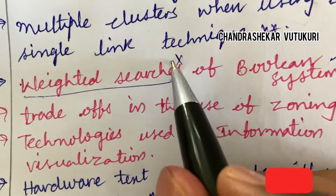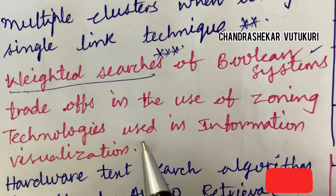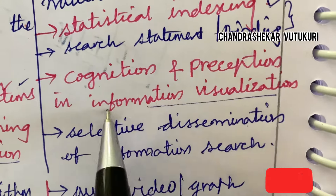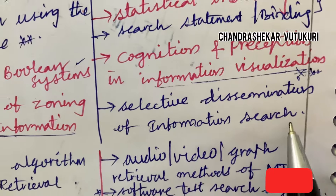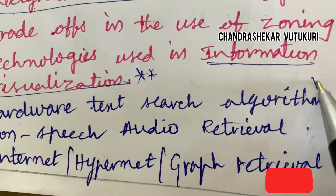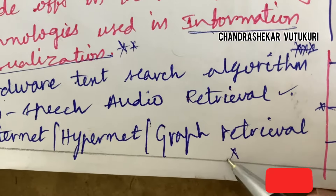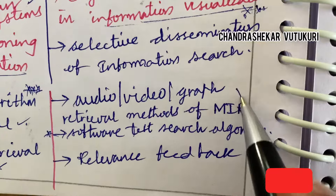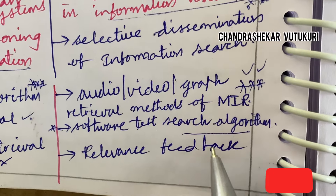Moving into Unit 4 — weighted searches of Boolean systems related to weighted searches is a definite question this time. Trade-offs in the use of zoning, technologies used in information visualization, is a topmost question. Cognition and perception in information visualization — you will get one question for sure. Selective dissemination of information search is also a short question. In Unit 5, hardware text search algorithm or software search algorithm — you will get one for sure. Non-speech audio retrieval, internet hypernet graph retrieval may be short questions. Explaining audio, video and graph retrieval methods is a long question. Software text search algorithm is also very important, and defining the term relevance feedback.